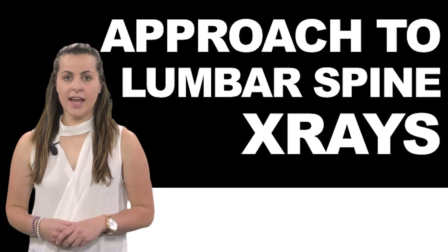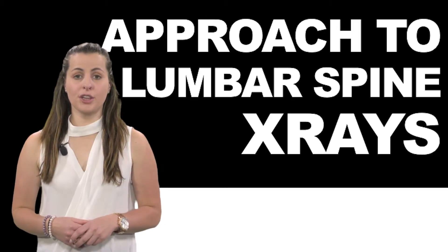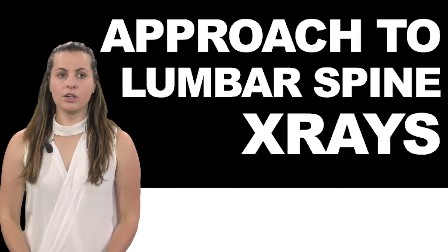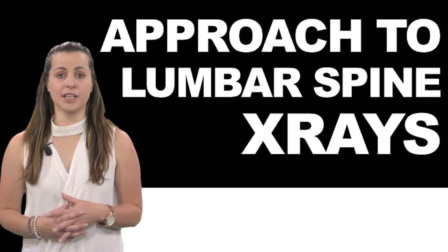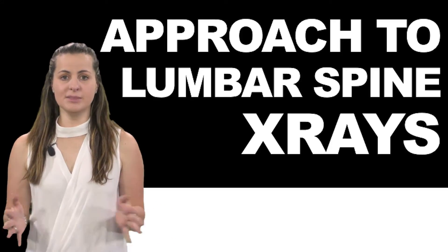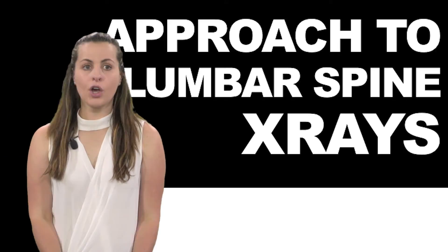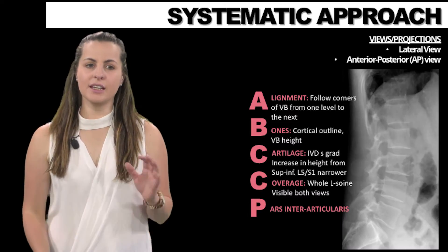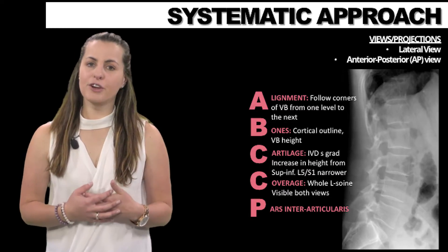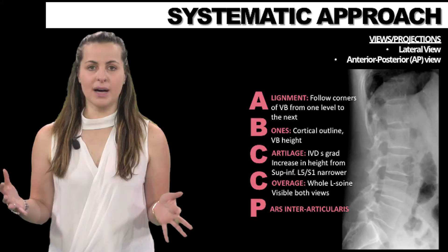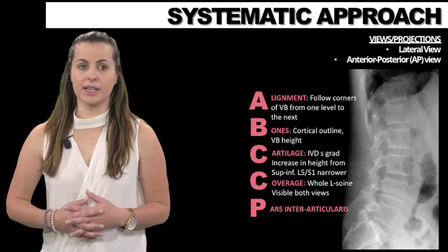Oblique views are taken if spondylolysis or spondylolisthesis is suspected. In the context of trauma, similar principles apply to imaging both the thoracic and lumbar spine as were discussed for the approach for the cervical spine. X-rays constitute the initial choice of imaging in most presentations; however, further imaging with CT or MRI is often appropriate in the context of high-risk injury.